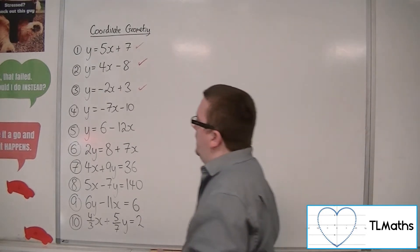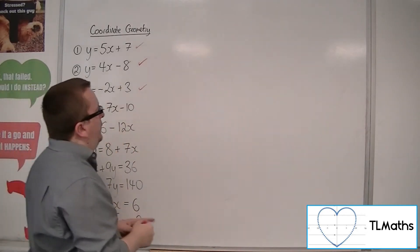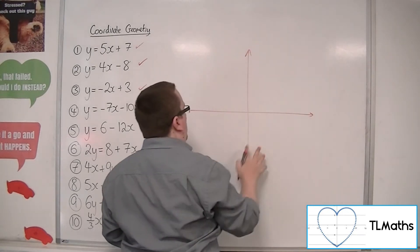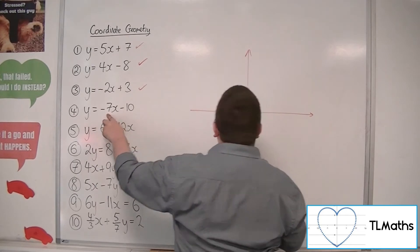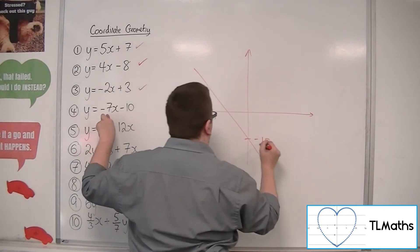Number 4, we can see that when x is 0, we're going to have y is equal to minus 10. So that means it's crossing through the y-axis at minus 10, so somewhere down here. It's got a negative gradient because it's got the minus 7, so it's going to have to be going through something like that. There's minus 10.